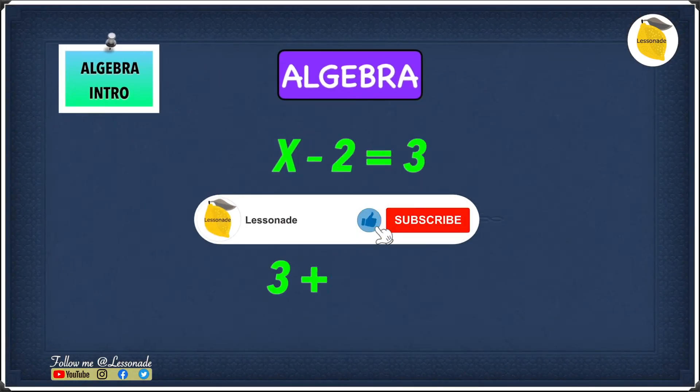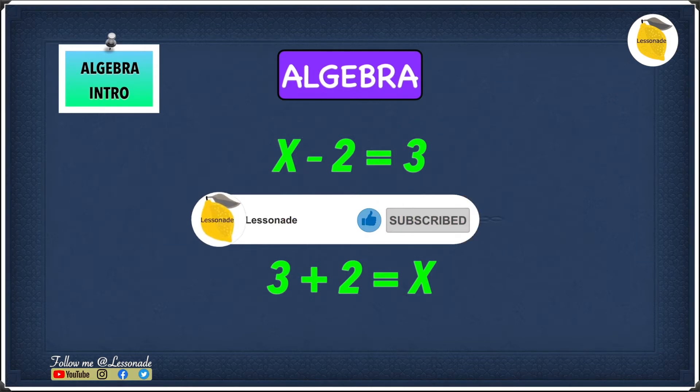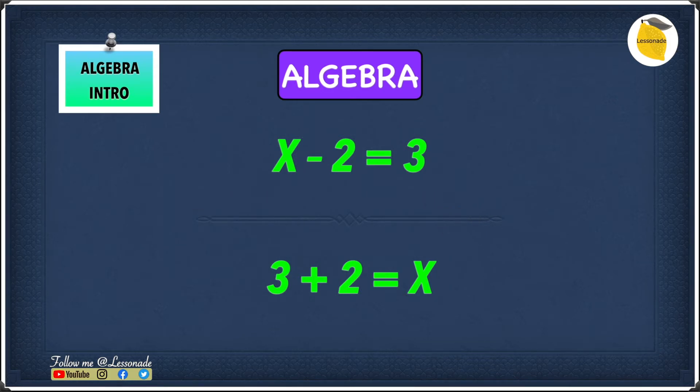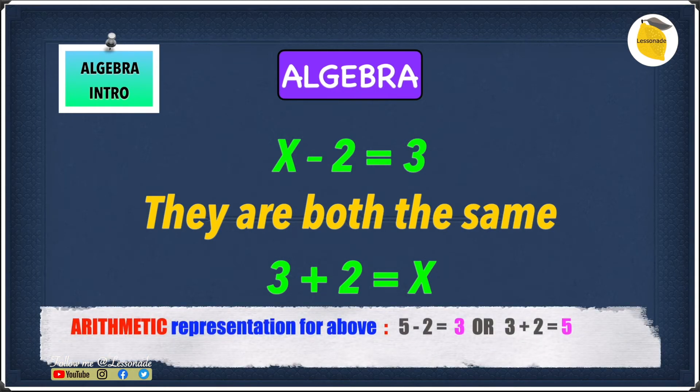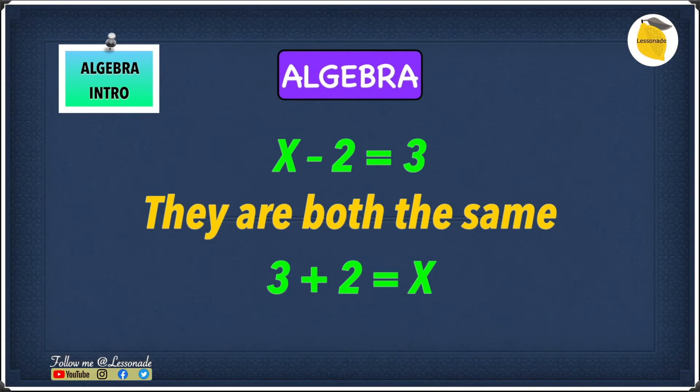Now let's have a look at these two examples which is x minus 2 equals 3 and 3 plus 2 equals x. If you notice, they're both the same, and if you're wondering why they're the same, well, they're the same because they're just rearranged. x minus 2 equals 3 is the same as 3 plus 2 equals x, but the equation for both of them is rearranged so they look different.